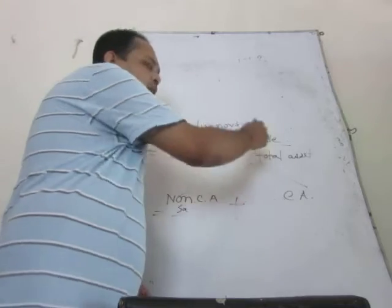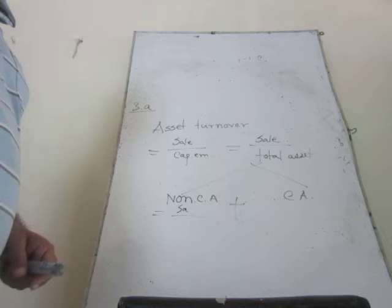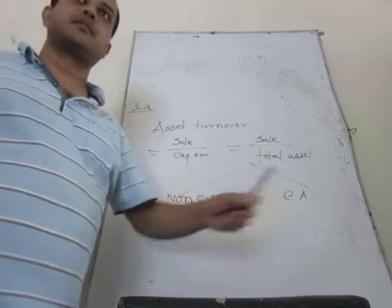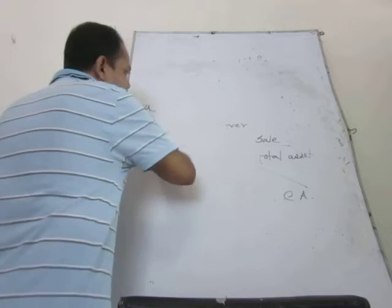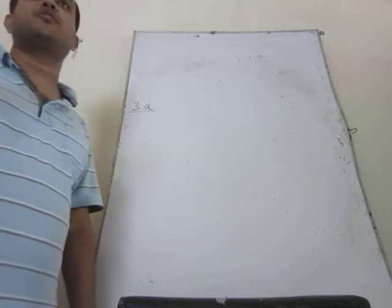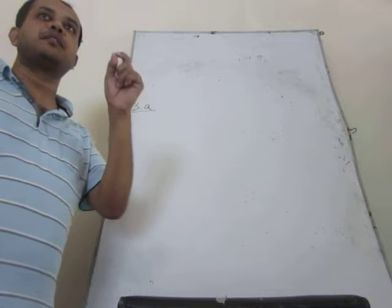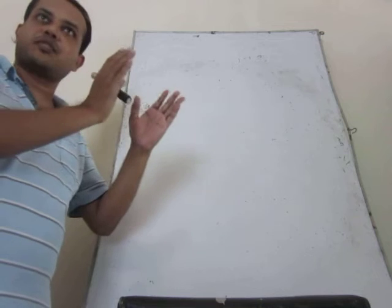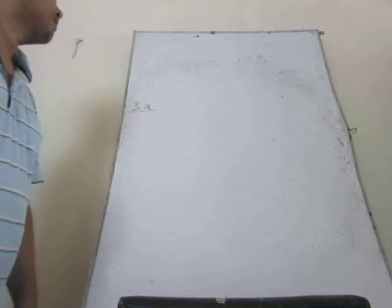In the case of non-current asset, in terms of non-current asset, it will provide you the total asset. So by using this ratio, we are trying to measure the efficiency of the business organization in generating sale, using its investment in the case of asset — whether the asset is used efficiently.